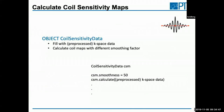In SURF, a method for calculating coil sensitivities is implemented. There is an object called CoilSensitivityData — you put K-space data in and call an option to calculate coil maps. You can set parameters such as a smoothness constraint to ensure spatially smooth coil maps. It's basically just two or three lines of code to get your coil maps.